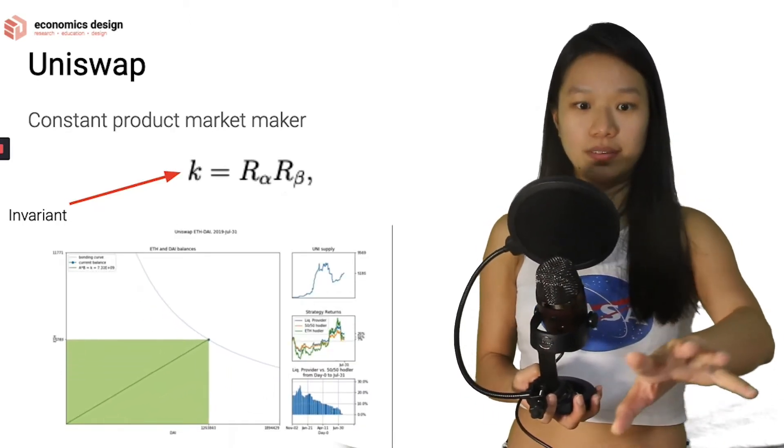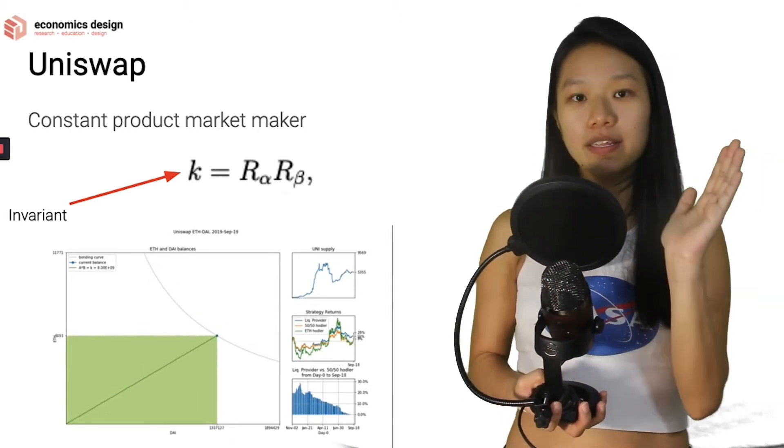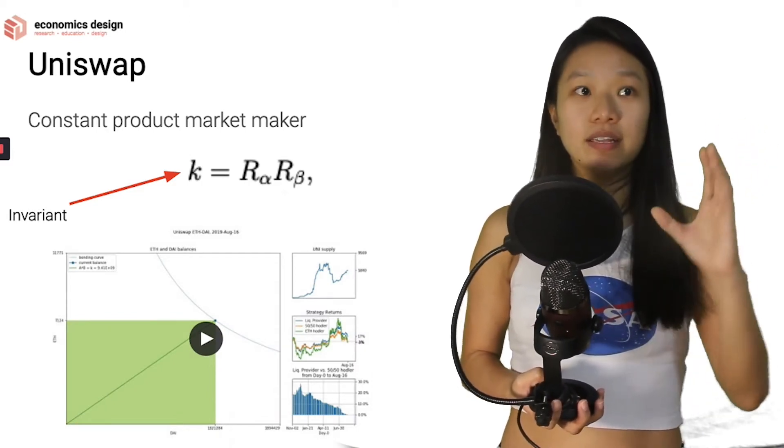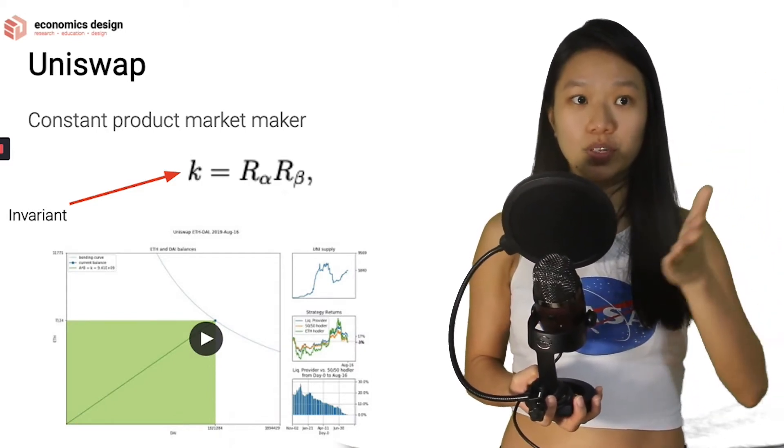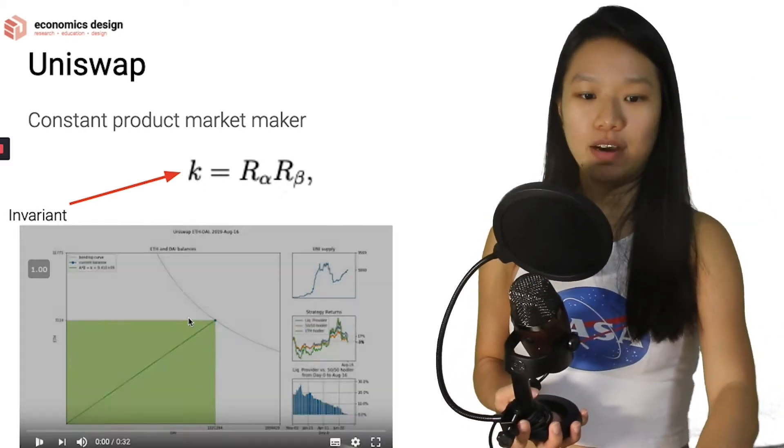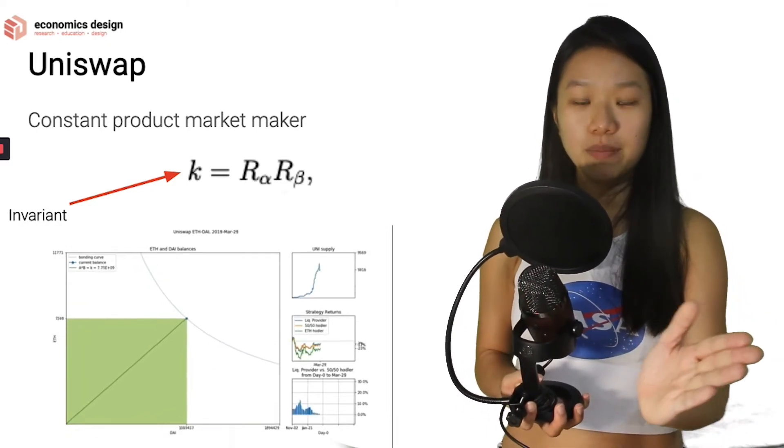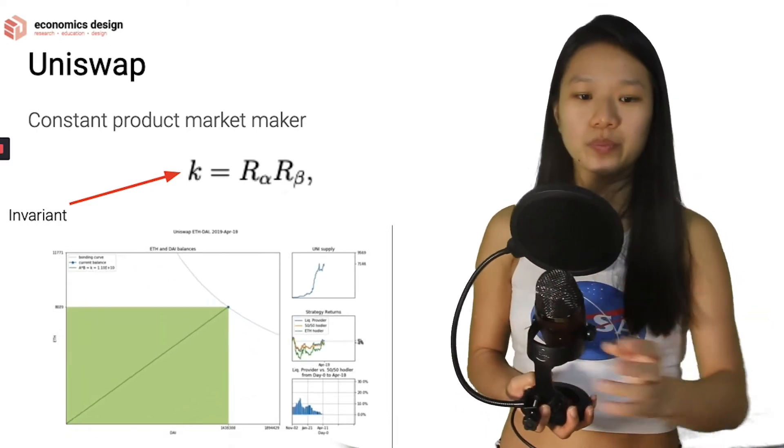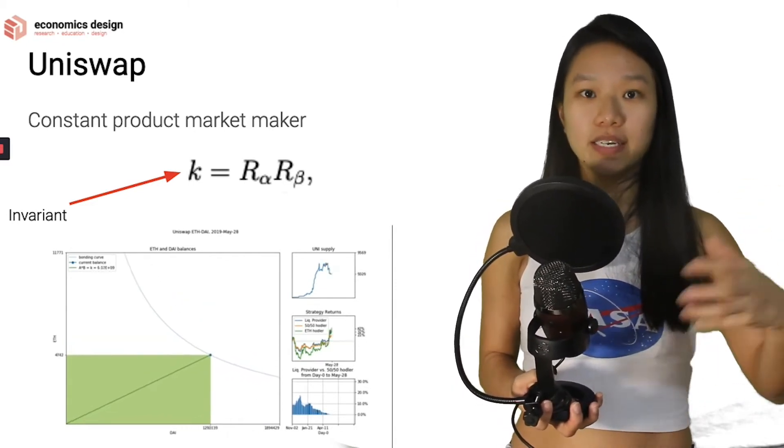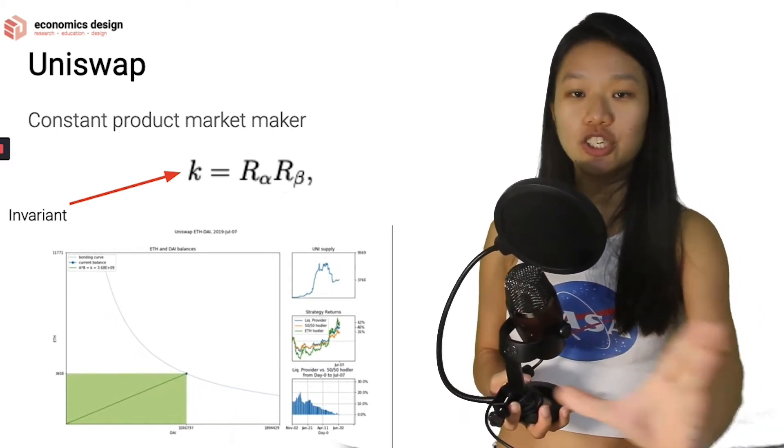And if you see this model, what I want to show in this little video that you see over here is that the curve changes. Remember we talked about how curve doesn't really move. The thing is, the curve itself, the curvature doesn't move so much, but it can move in and out. What does it mean? If you look at this video again, what you see is that the curve keeps shifting outwards. When a curve shifts outwards, it means that there's more liquidity being added into the system. But the curve doesn't really change so much. It just shifts outwards.